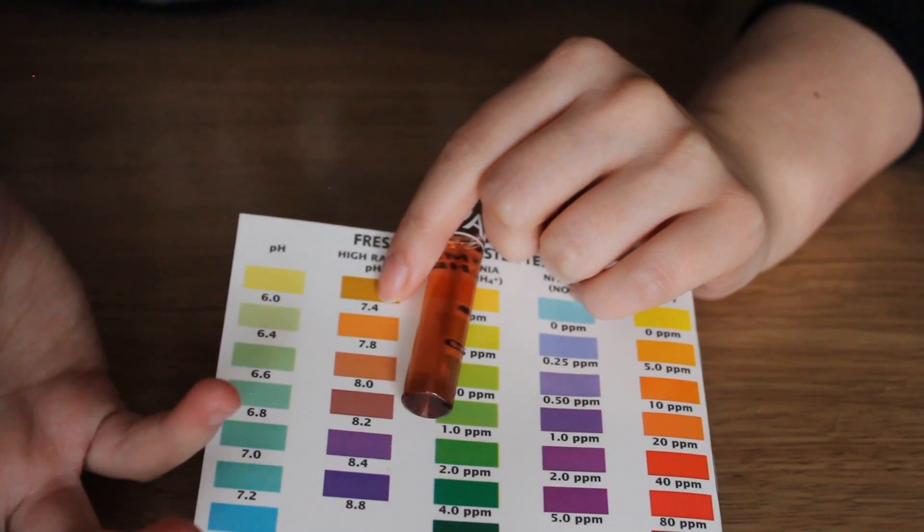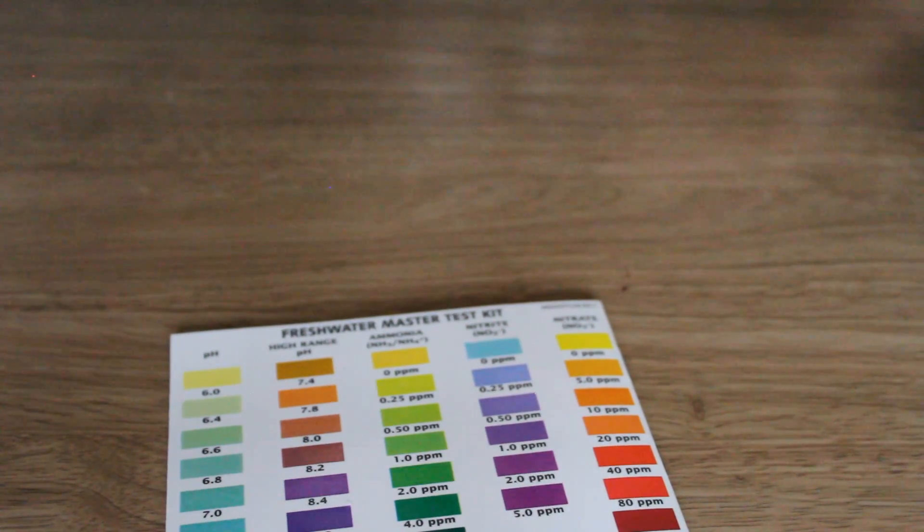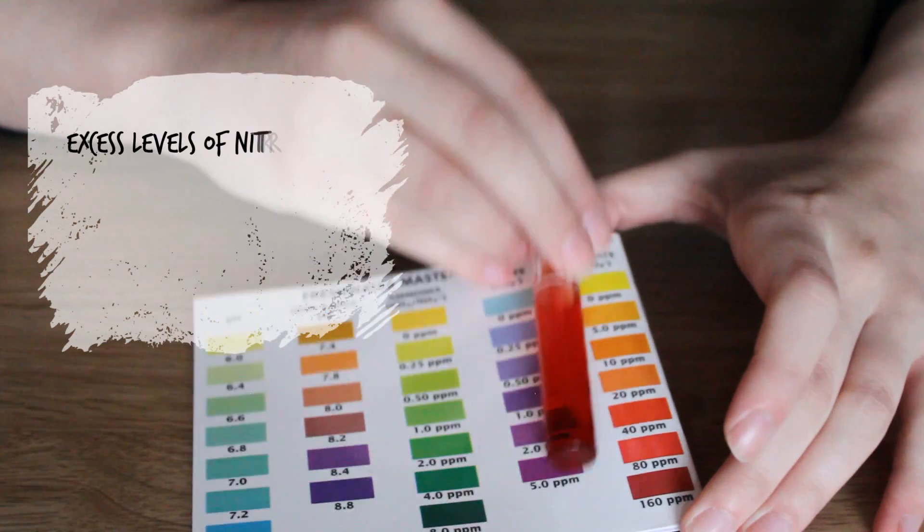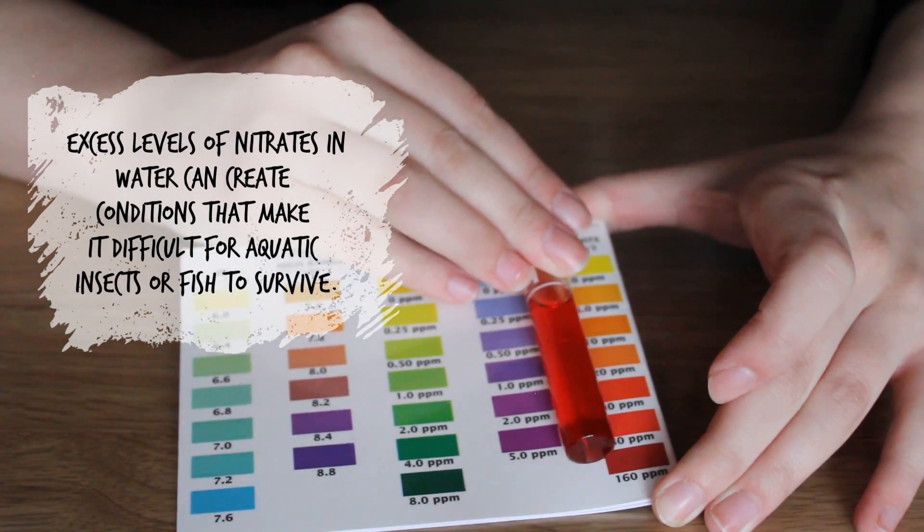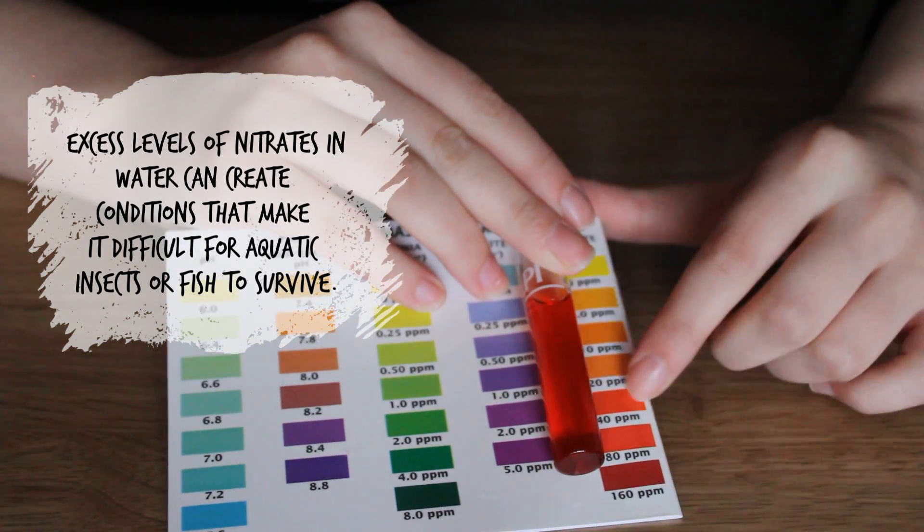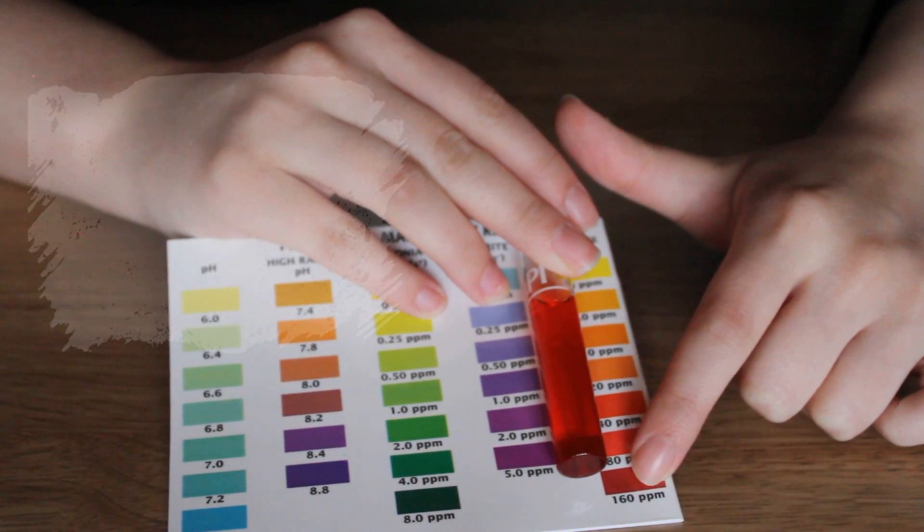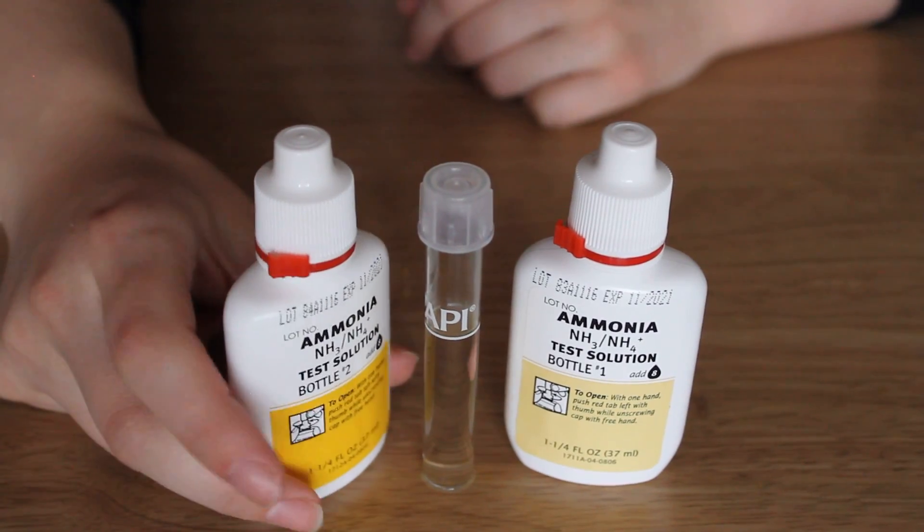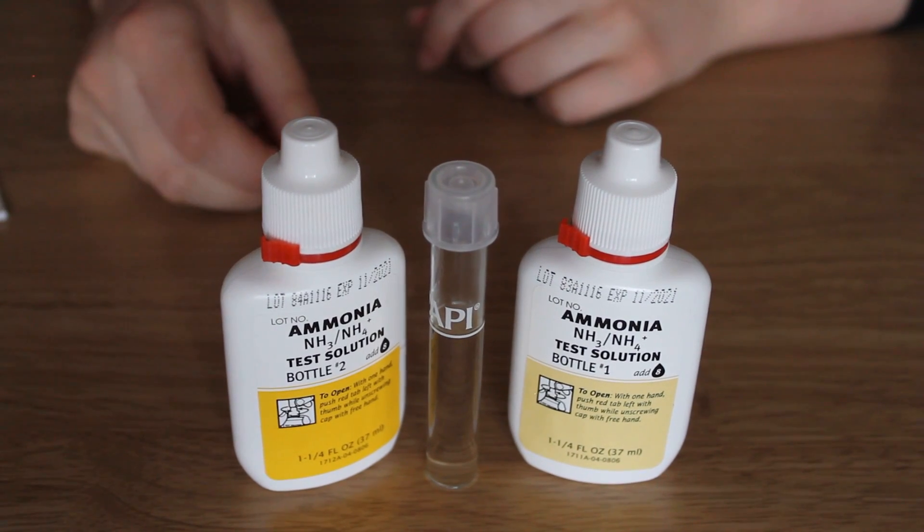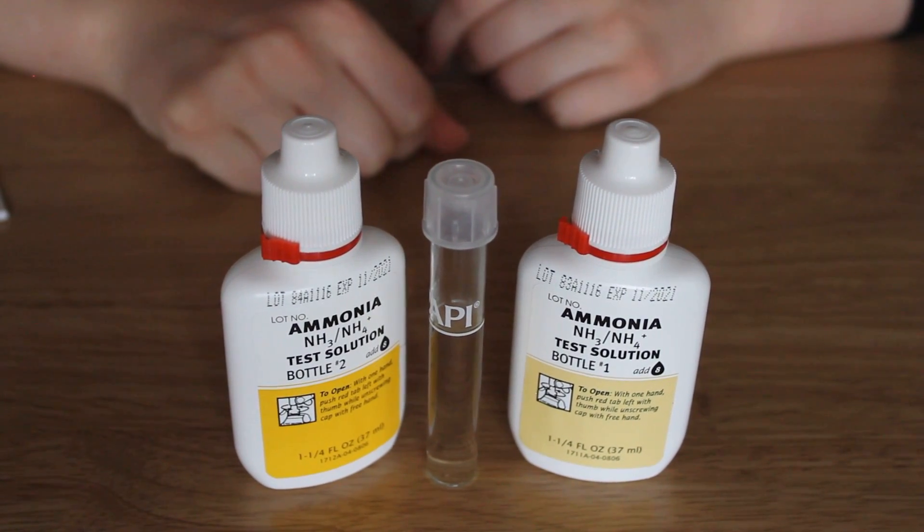As for the nitrate test that is now complete. As we can see it's a very deep red. Let's say between 40 and 80. I don't think it's dark enough to be 160. The final test we need to try is the ammonia and I don't believe that was on the test strip so I literally have no indication of what this could be.